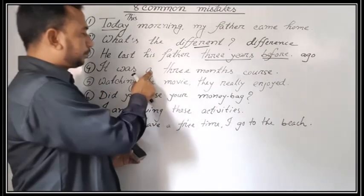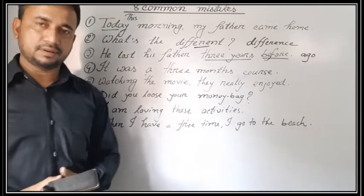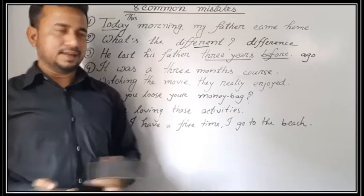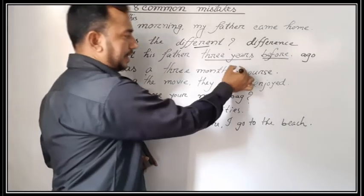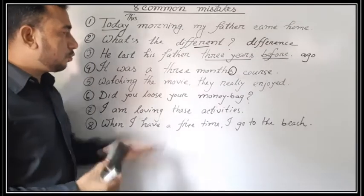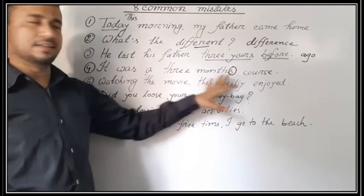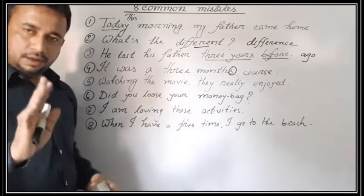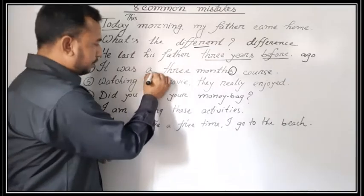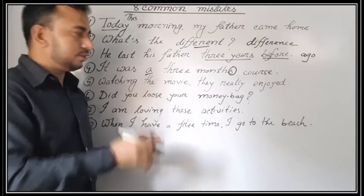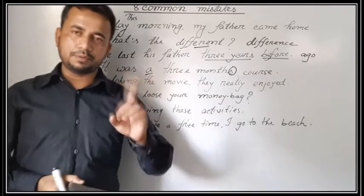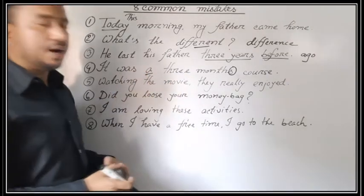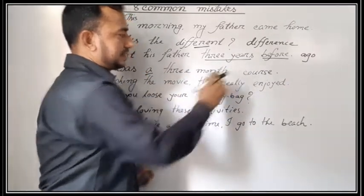Look at sentence number four: 'It was a three months course.' What's wrong with that? Yes, the wrong is the 's' — it will be 'It was a three month course.' Because 'three month course' functions as a noun determiner, the next noun will be singular. So it will be 'a three month course,' not 'three months.'